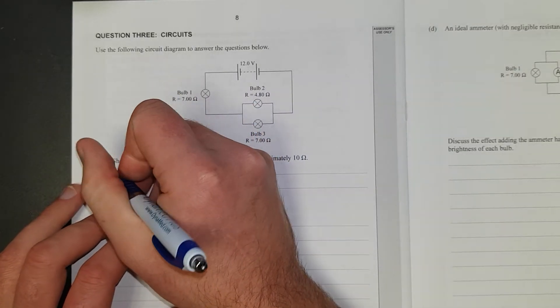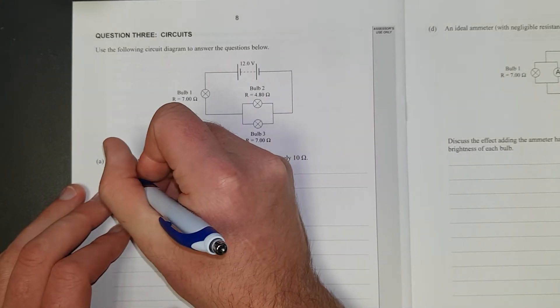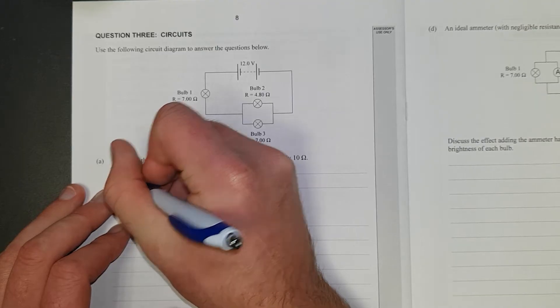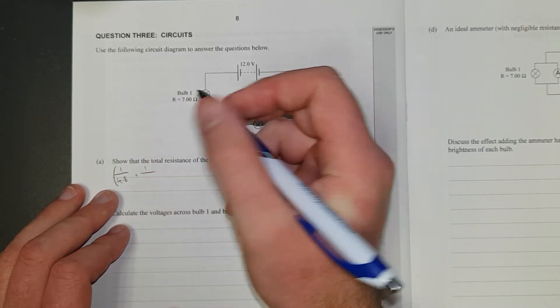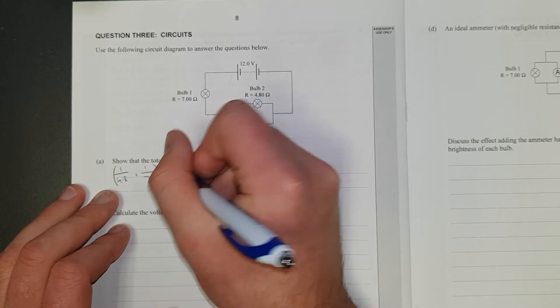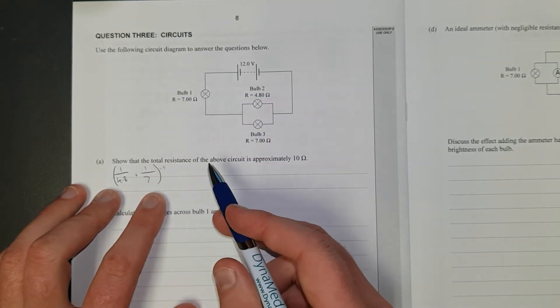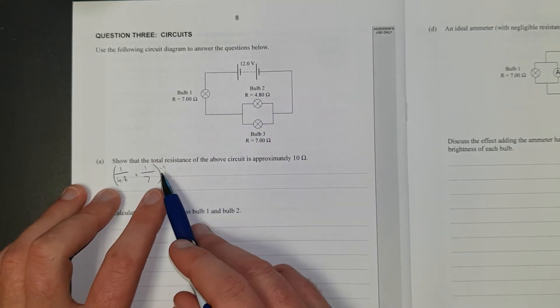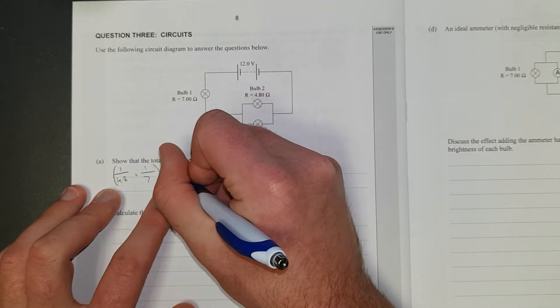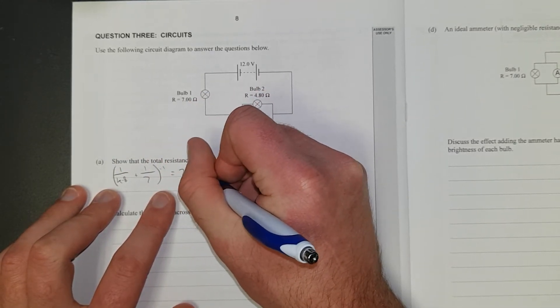So in parallel we have, chuck some brackets, one over 4.8 plus one over 7. And then we've got to take the inverse of that, so we flip it because it's equal to one over the answer. So we have to flip that to get the actual answer. It gives me 2.84 ohms.